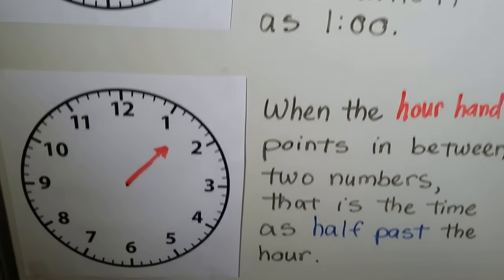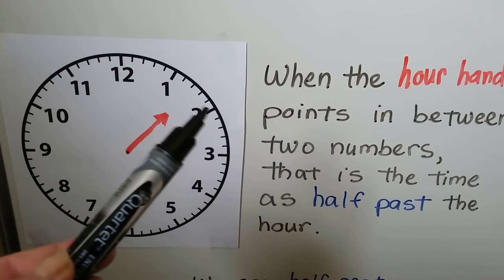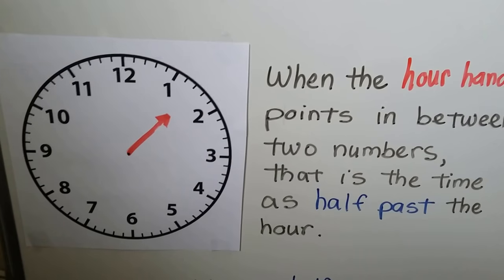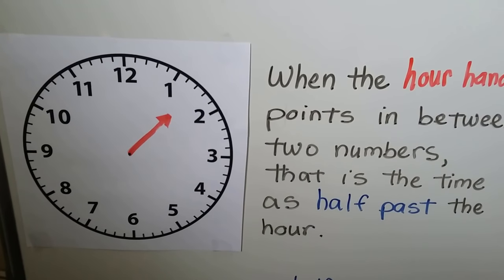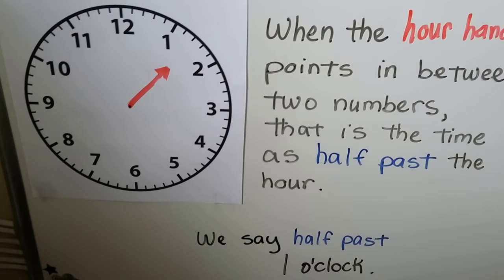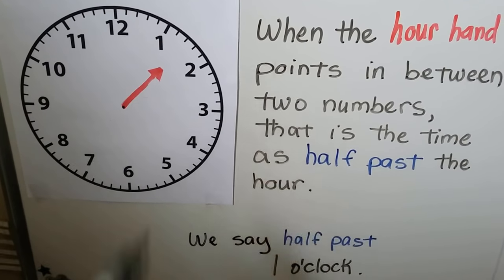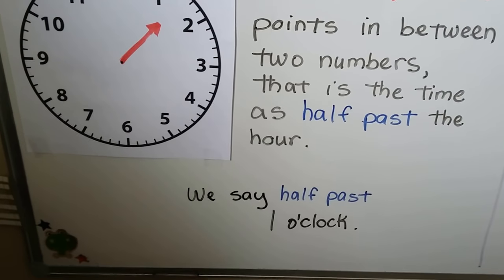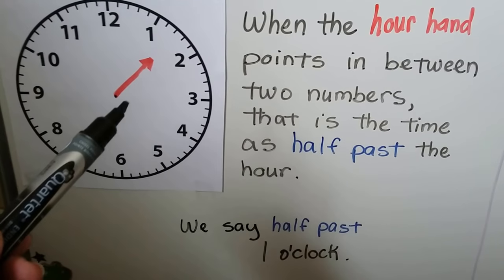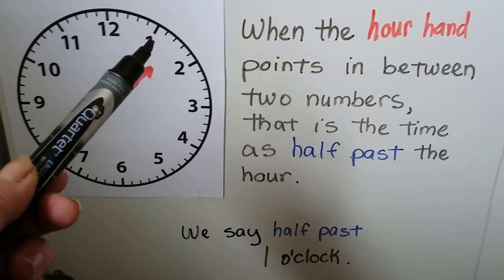When the hour hand points in between two numbers, that is the time as half past the hour. We say half past one o'clock — the hour hand is in between the one and the two, so it's half past the one.